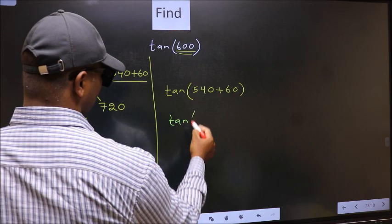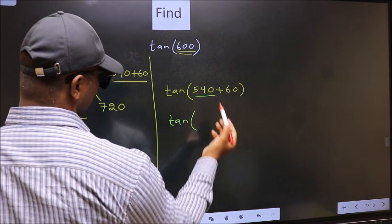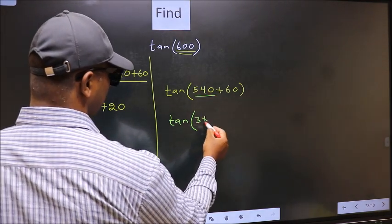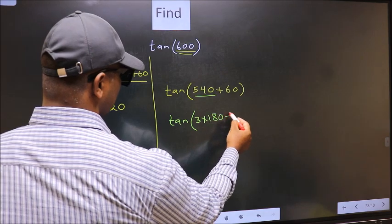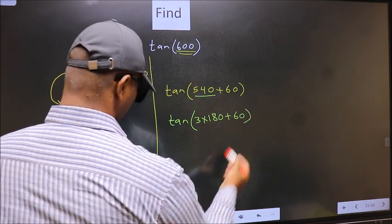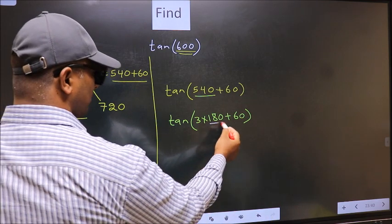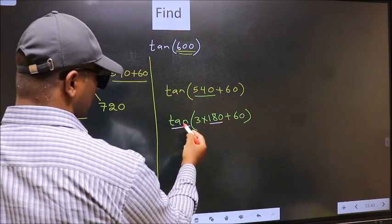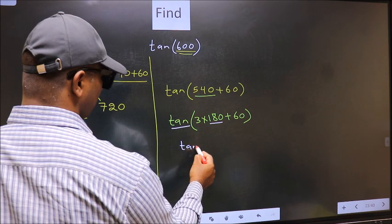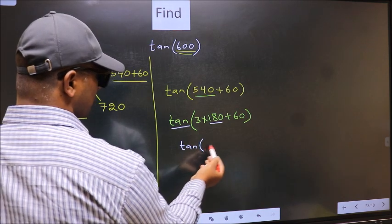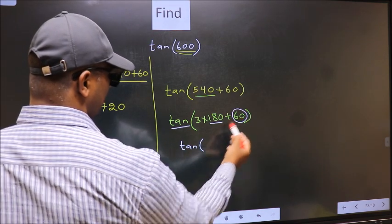Next, tan—in place of this now we should write 3 times 180 plus 60. Here we have 180, so tan is not going to change. It will remain tan, and inside we get this angle 60.